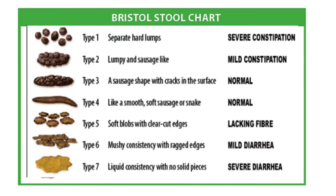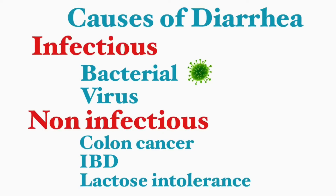What we're seeing here is the Bristol Stool Chart. Based on the appearance of your stool, you can classify someone as constipated — type 1 and type 2 — normal with type 3 and type 4, and then diarrhea being type 6 and type 7, where it gets more soft and liquid.